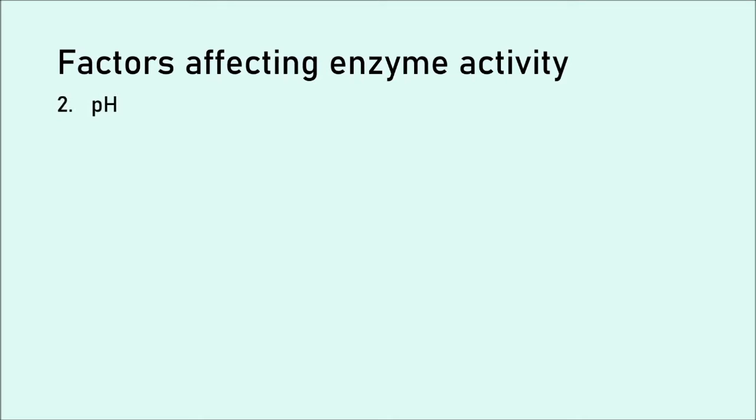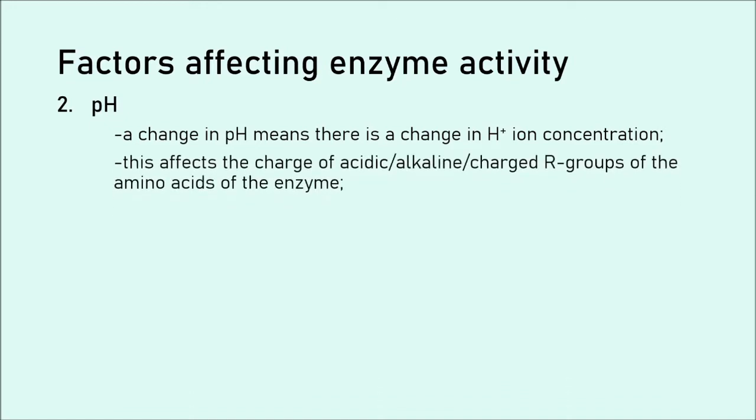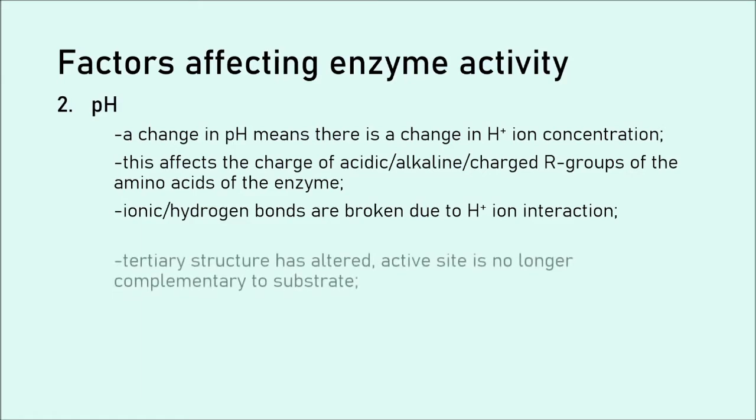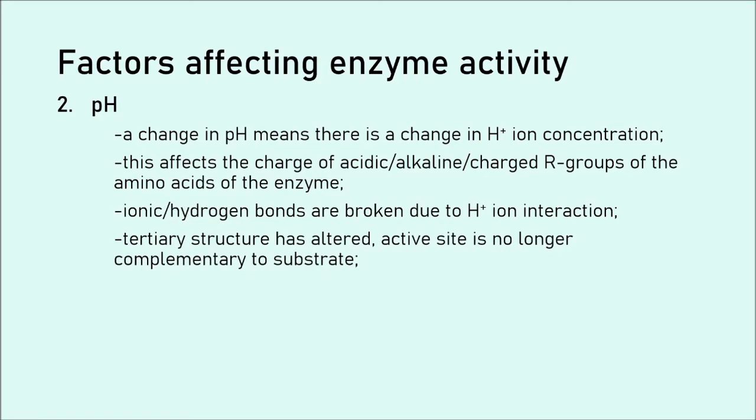The next factor is pH. However, we need to be able to explain why pH affects the activity. So first of all, what is pH? pH is a measure of hydrogen ion concentration. This means that if we change our pH, there will be a change in H plus ion concentration, quite simply. This affects the charge of the acidic or alkaline or even the charged R groups of the amino acids of the enzyme. So as we know, enzymes are proteins in most cases, and proteins, they are long chains of amino acids fold into a certain shape. And those amino acids have residual groups, R groups. Some of them are charged, some of them are polar, some of them are hydrophobic, some of them are alkaline, some of them are acidic. They have all these different properties. And the H plus ions will ultimately affect these R groups in some way. There is some kind of interaction. And this means that the ionic or hydrogen bonds between the R groups can be weakened or broken or just affected in such a way that then the tertiary structure alters.